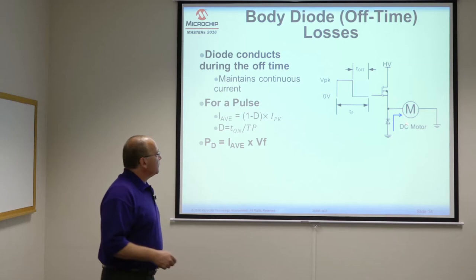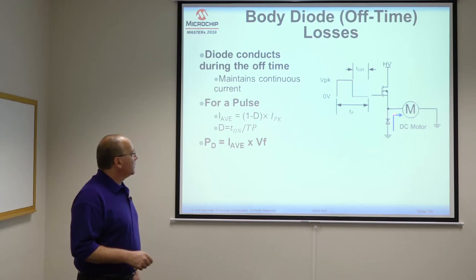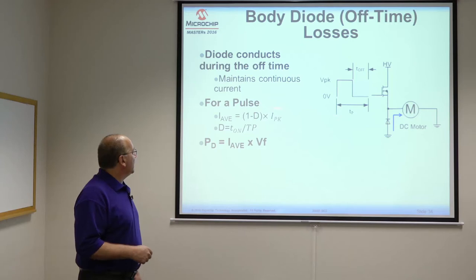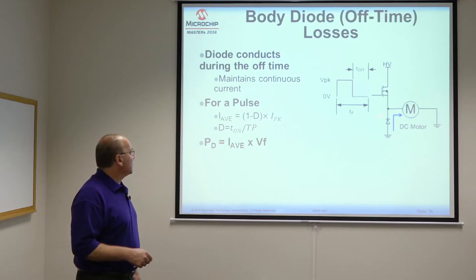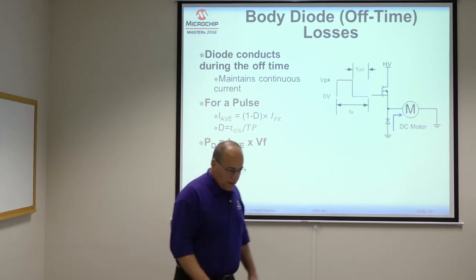Another point of power dissipation is the freewheeling diode. Current only flows through this diode when the MOSFET is off. We define the diode's operating duty cycle as one minus the MOSFET duty cycle, times the peak motor current. The off duty cycle relates to the off time. Once you have that duty cycle, calculate average current, and average current times the forward voltage drop equals the power dissipated in that diode.